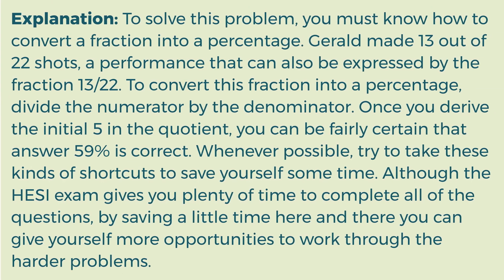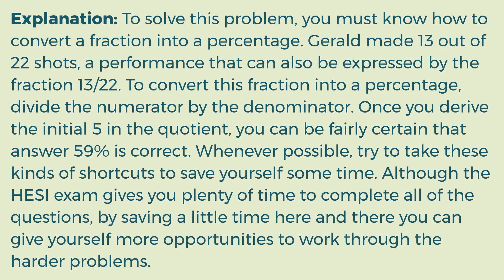Explanation. To solve this problem, you must know how to convert a fraction into a percentage. Gerald made 13 out of 22 shots, a performance that can also be expressed by the fraction 13/22. To convert this fraction into a percentage, divide the numerator by the denominator. Once you derive the initial 5 in the quotient, you can be fairly certain that answer 59% is correct.